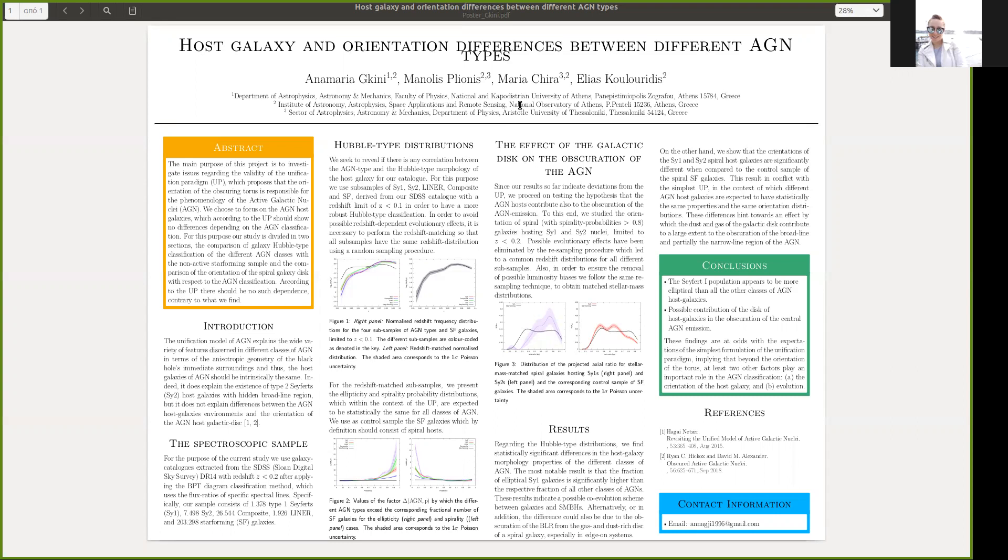For the second part, we used only the spiral Seyfert-1, Seyfert-2, and star-forming galaxies up to redshift 0.2. Here, we also obtained the matched redshift and stellar mass distributions in order to exclude possible evolutionary and luminosity biases.